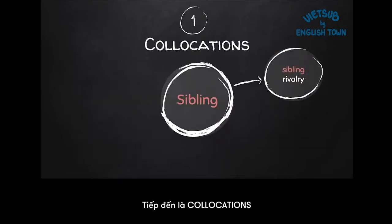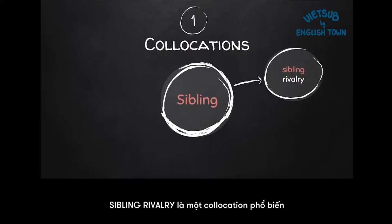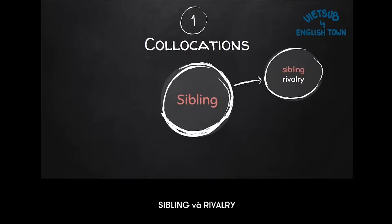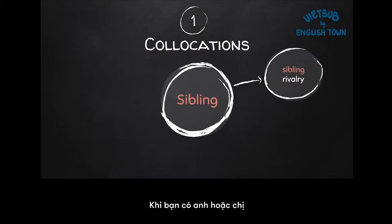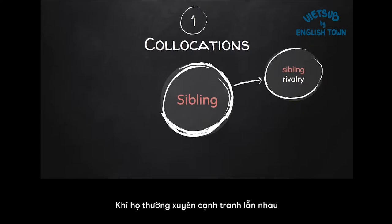Let's look at collocations. To get started easy, we chose a word like sibling that doesn't have a lot of collocations. Collocation means a word or words that go together often. Sibling rivalry is a common collocation — you'll see these two words together. Sibling rivalry means when you have a brother or sister who like to compete with each other in lots of different things — maybe in sports, maybe in eating food at the dinner table, maybe in business. When they always like to compete with each other, it's a sibling rivalry.